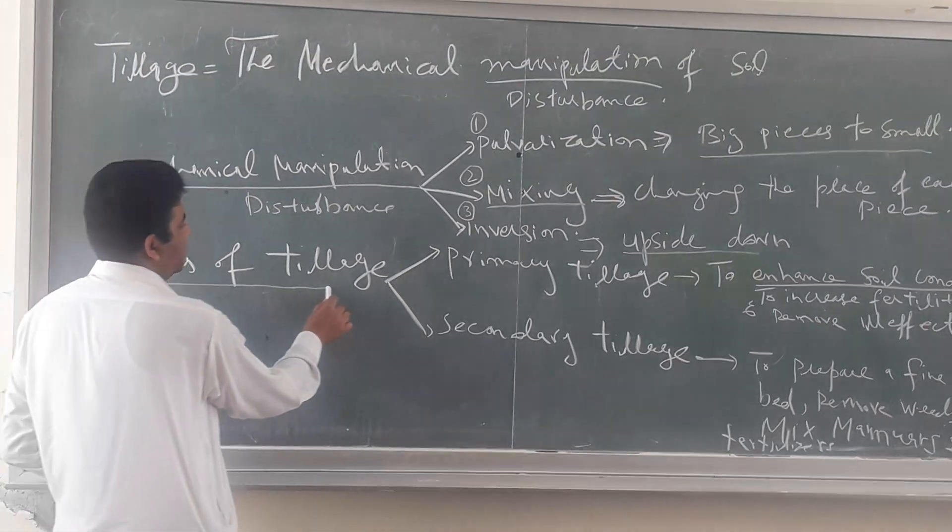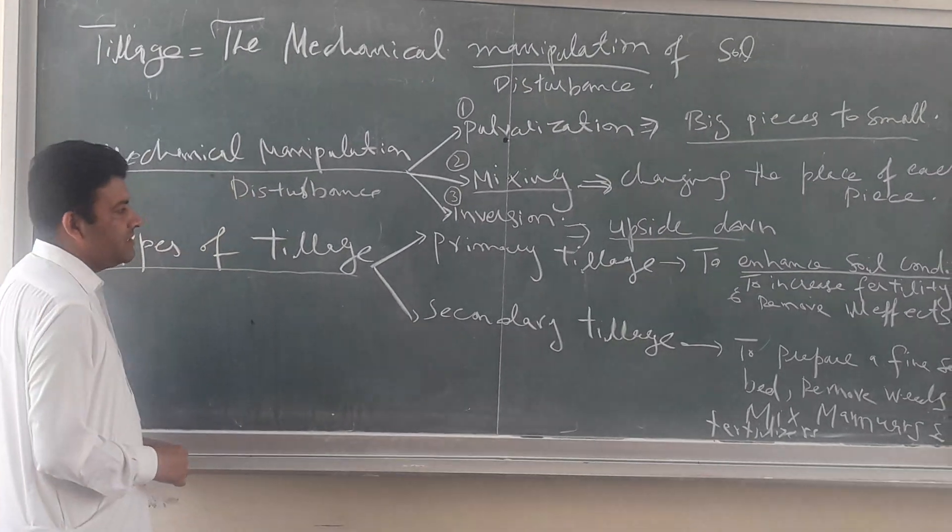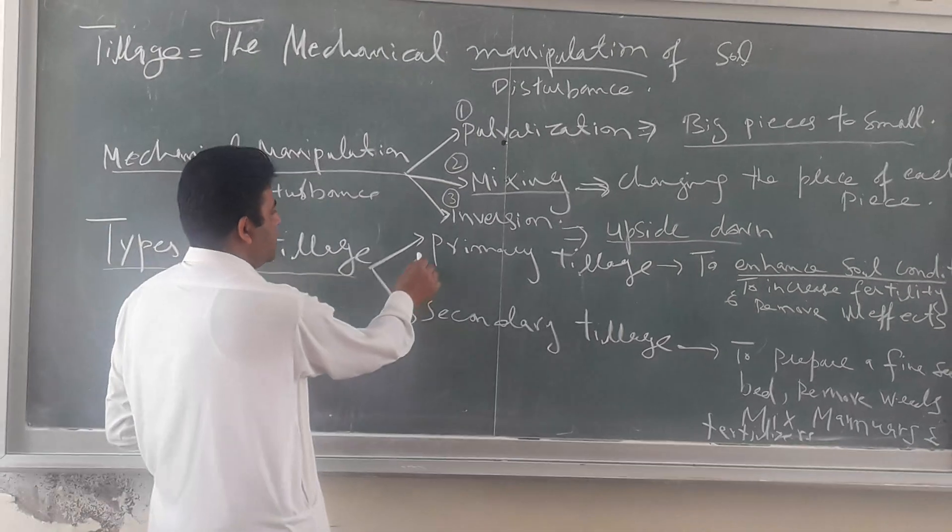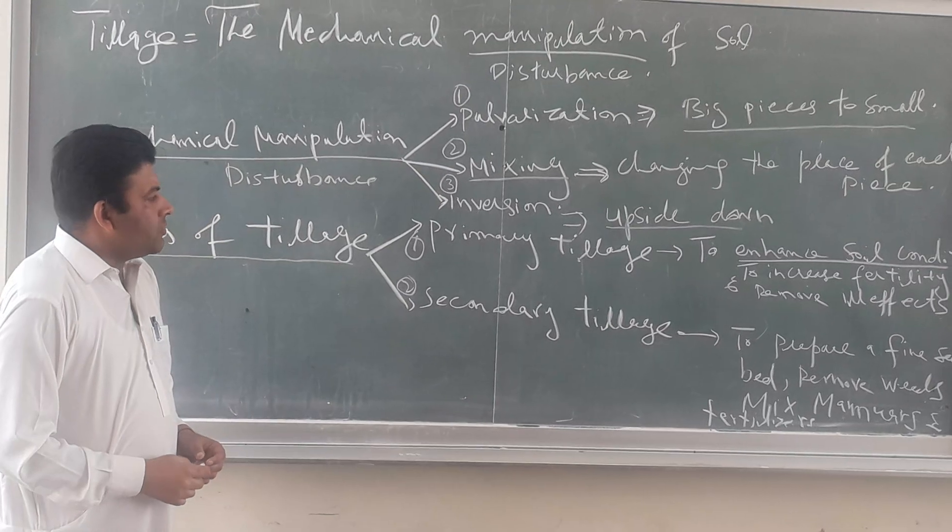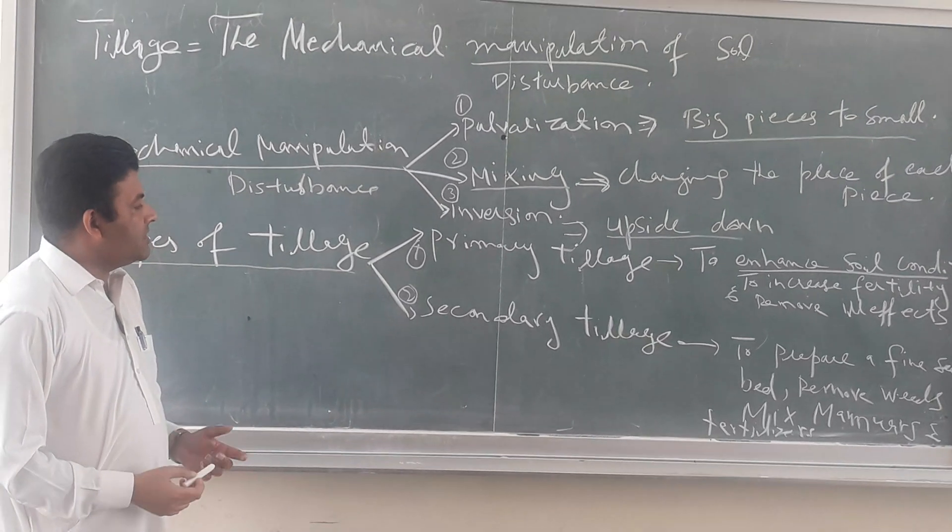Then types of tillage. So there are two types of tillage. One is called primary tillage, and the second one is called secondary tillage. So what is primary tillage and what is secondary tillage?